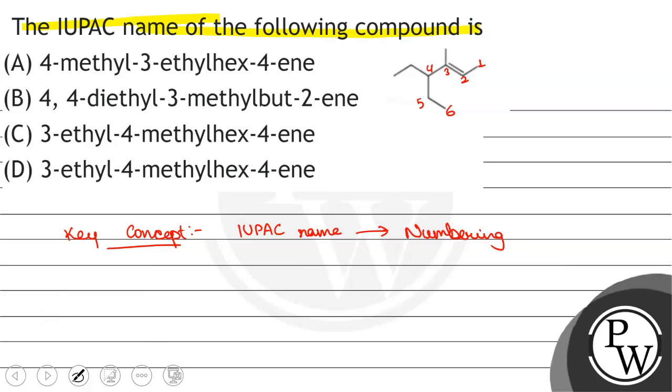Now we will see that here, number 4 is ethyl. So 4-ethyl. Number 2 is ethyl, number 3 is ethyl. 3-ethyl, 2-ethyl.